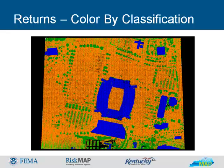The returns can be visualized based on the data collected. Simple display based on return attributes shows numerous assessment and analysis possibilities. Here, returns are colored by return classification. An example of classification is the separation of points into vegetation, building, or ground classes. Each of these groups implies knowledge of its nature. The picture shown is Commonwealth Stadium in Lexington, Kentucky.